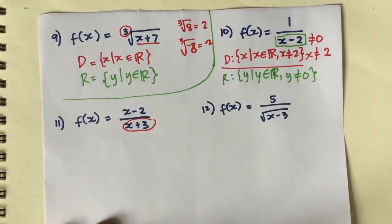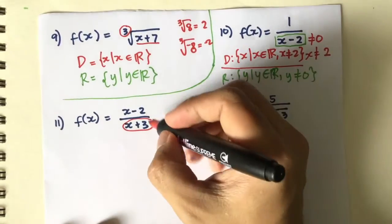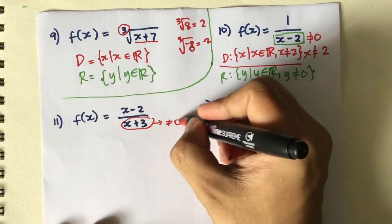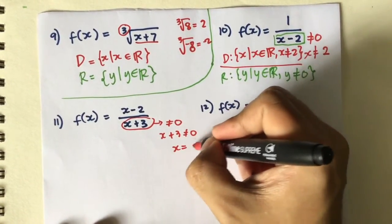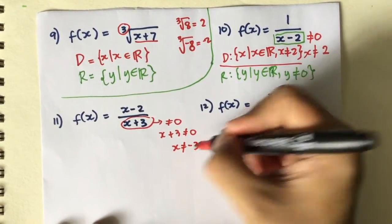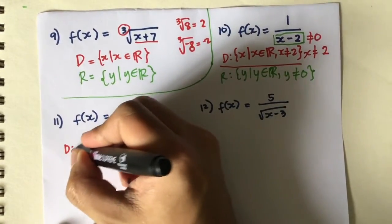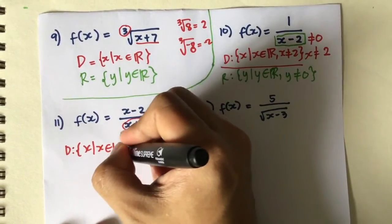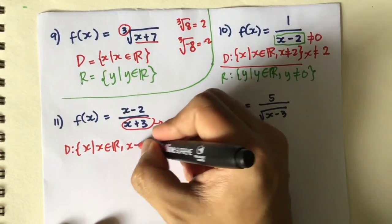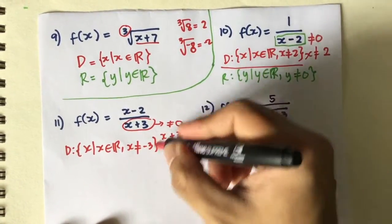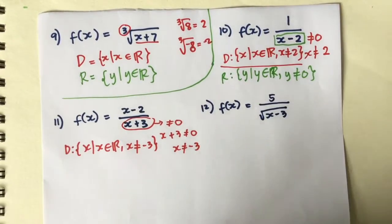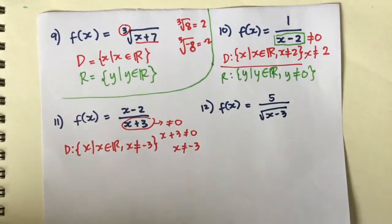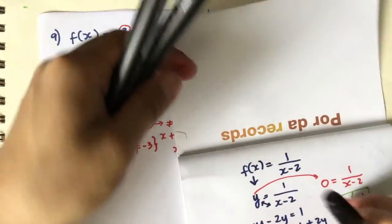For number 11, always look at the denominator — we don't care about the numerator. The denominator should not equal 0, so x + 3 ≠ 0, meaning x ≠ -3. The domain is all real numbers except x = -3, because -3 would make the denominator 0.